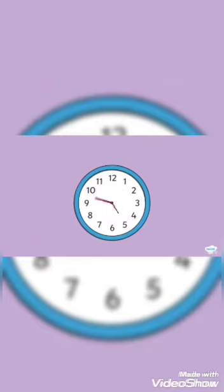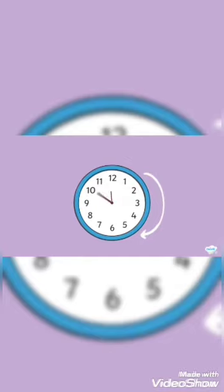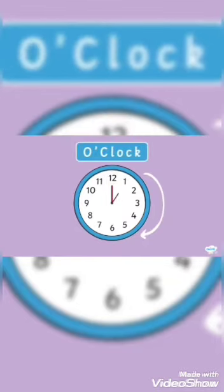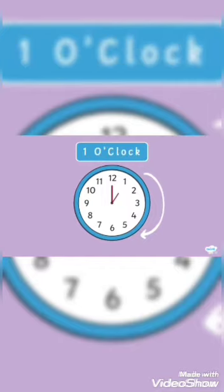Watch the minute hand zoom around the clock. You will notice that both hands spin in the same direction — we call this clockwise. When the longer hand, the minute hand, is pointing to 12 and the shorter hand, the hour hand, is pointing to one of the hour numbers, we call this o'clock. For example, when the minute hand points to 12 and the hour hand points to 1, we say it's 1 o'clock.